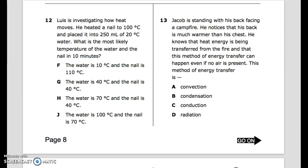Number 13: Jacob is standing with his back facing a campfire. He notices that his back is much warmer than his chest. He knows that heat energy is being transferred from the fire and that this method of energy transfer can happen even if no air is present. This method of energy transfer is: A. Convection. B. Condensation. C. Conduction. D. Radiation.